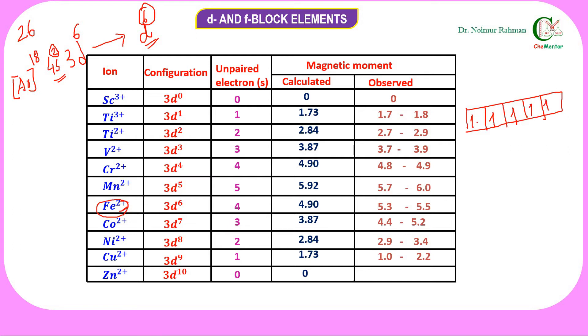So first fill up singly and then pairing will take place, according to Hund's rule. We can see that this is paired, there are 4 unpaired electrons. So n equals 4. Now we can calculate magnetic moment: μ = √(n(n+2)). In this case n equals 4, so it comes out to be 4.90.